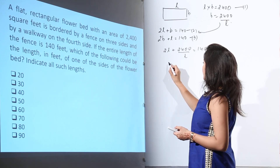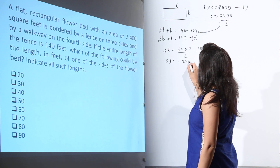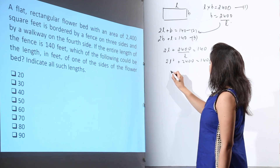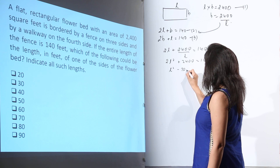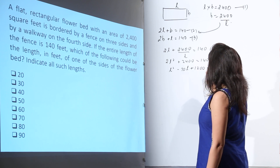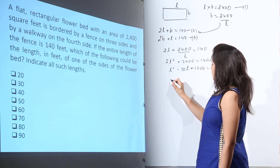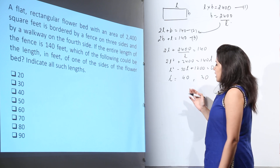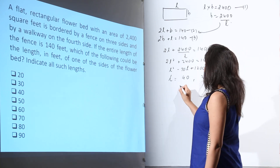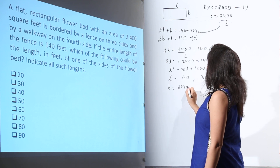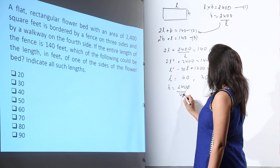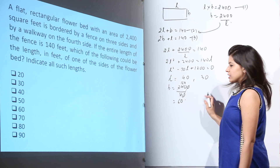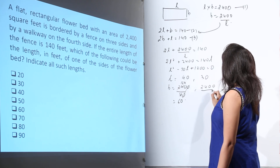Let us solve this quadratic equation. 2L² + 2400 = 140L. Dividing by the common factor 2 gives L² − 70L + 1200 = 0. Solving this equation, we find L = 40 and L = 30. If L = 40, then B = 2400 / 40 = 60.